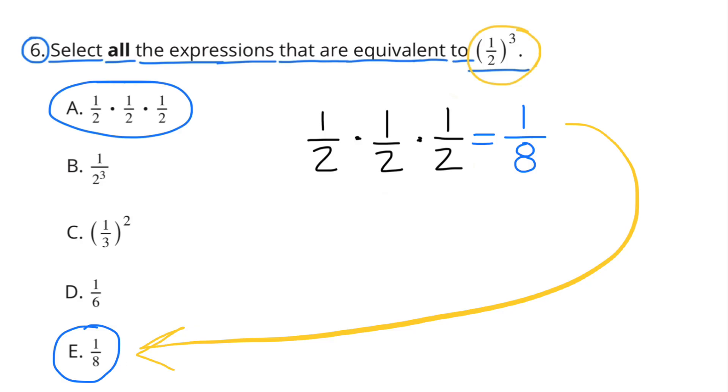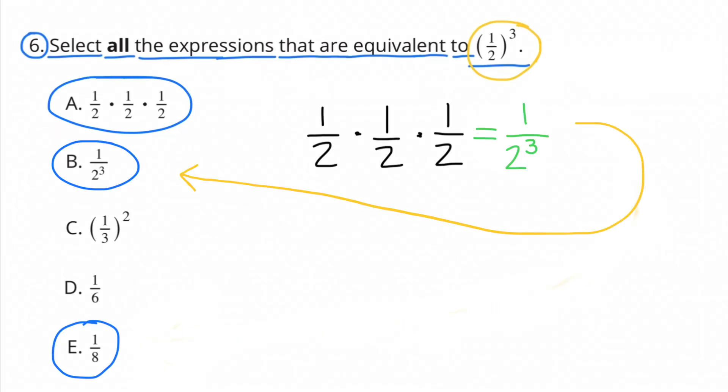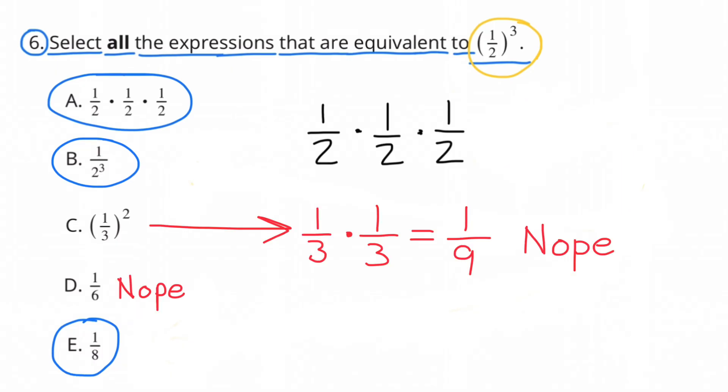1 half times 1 half times 1 half is the same thing as 1 over 2 to the third power. So we can select B. We cannot select C because 1 third to the power of 2 is the same as 1 ninth. And we cannot select D because its value is 1 sixth, and we're looking for a value of 1 eighth.